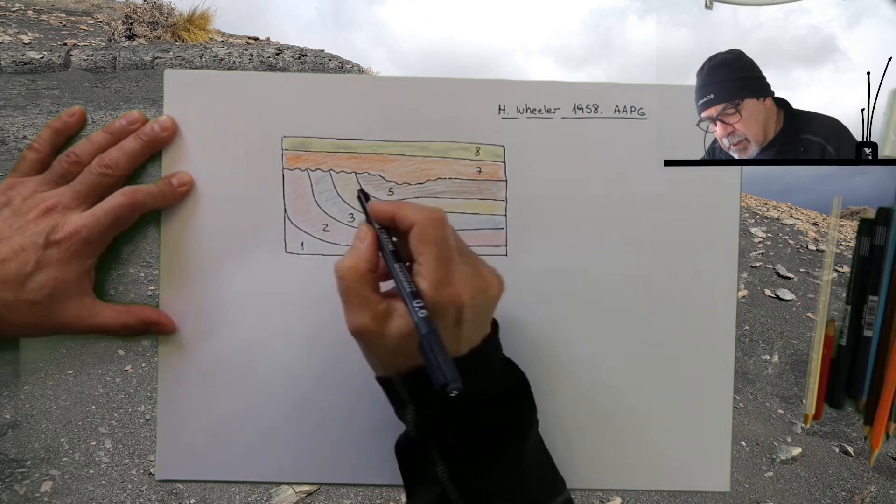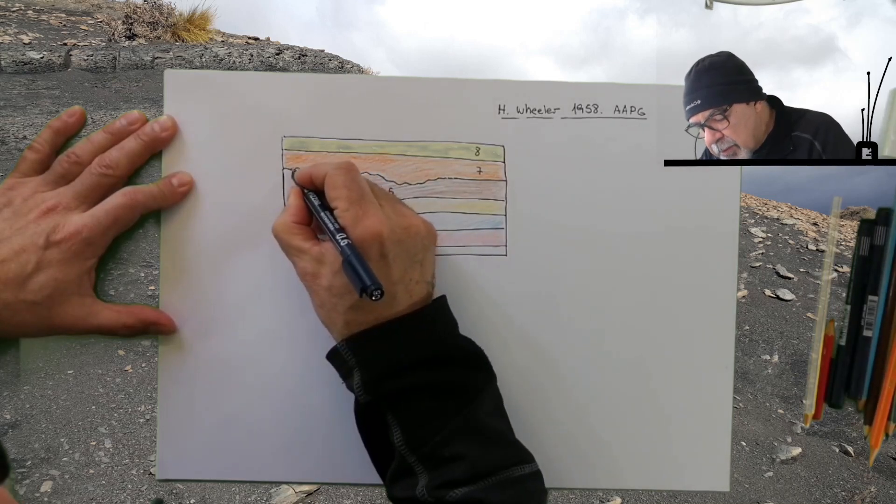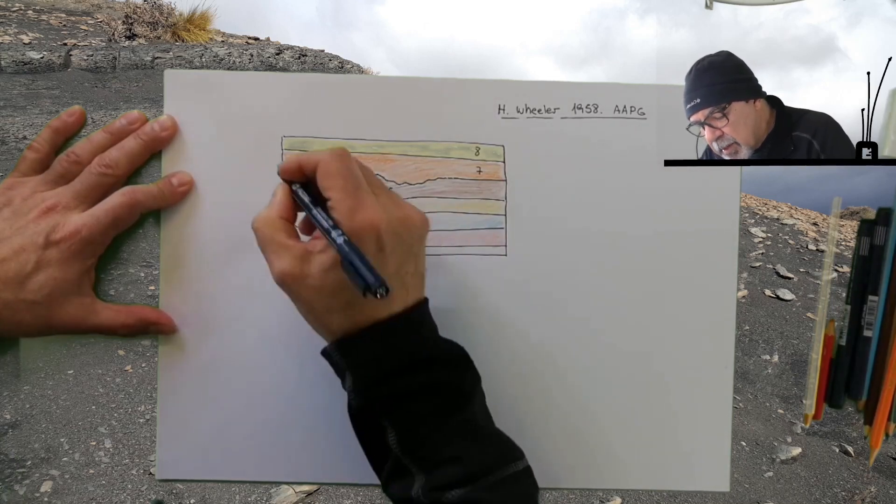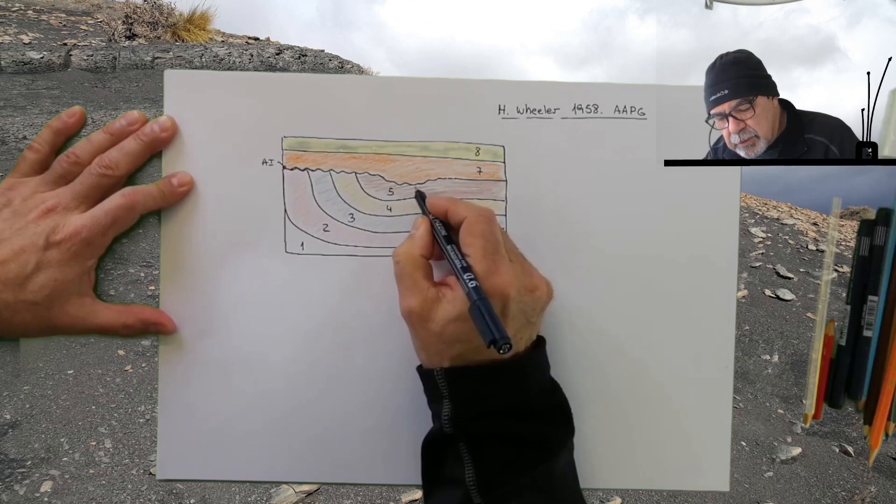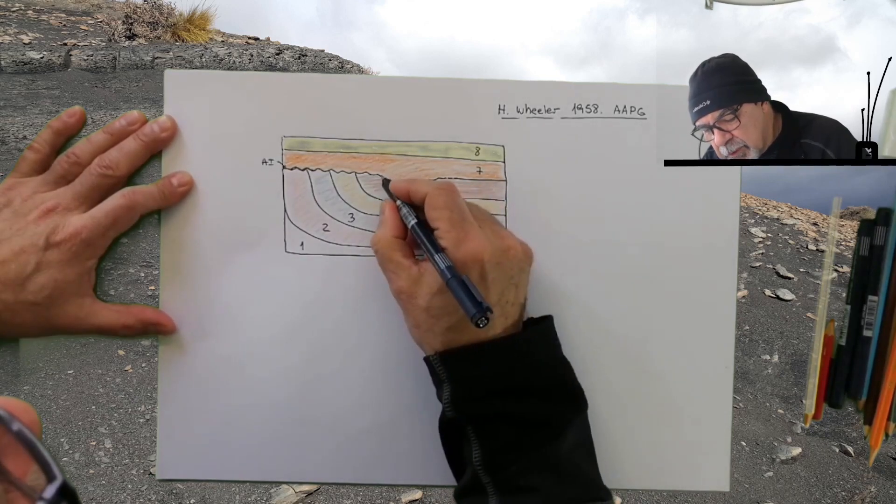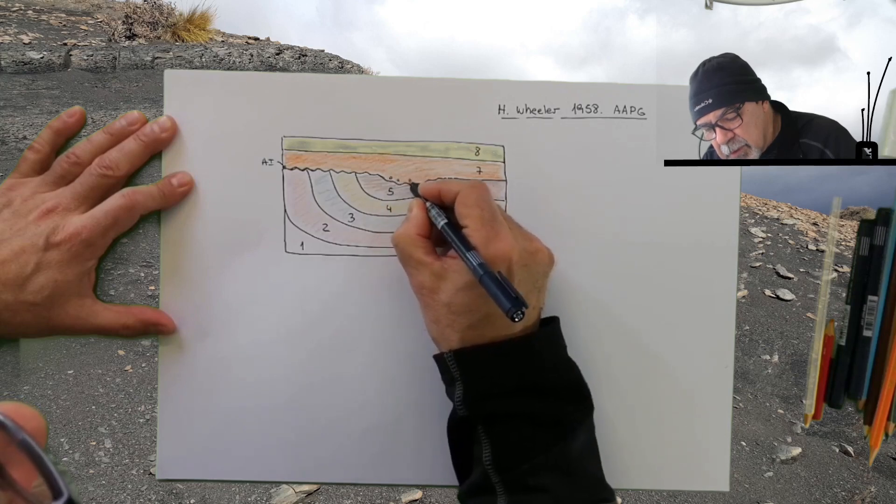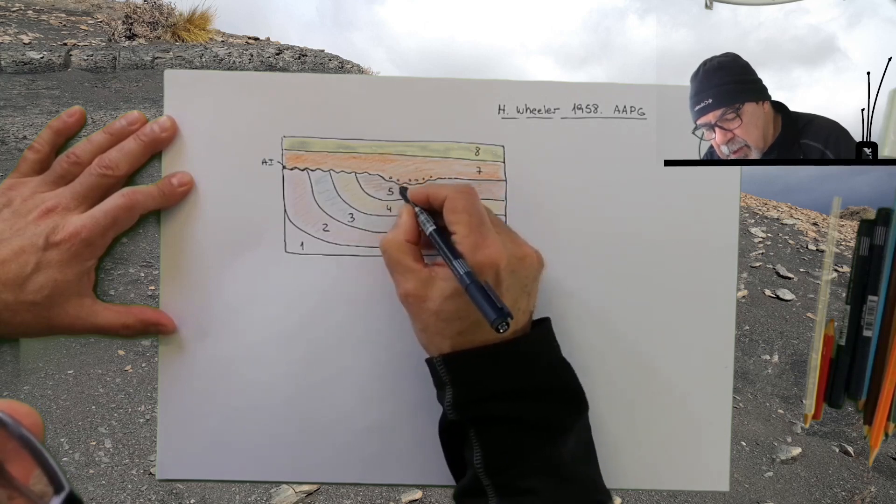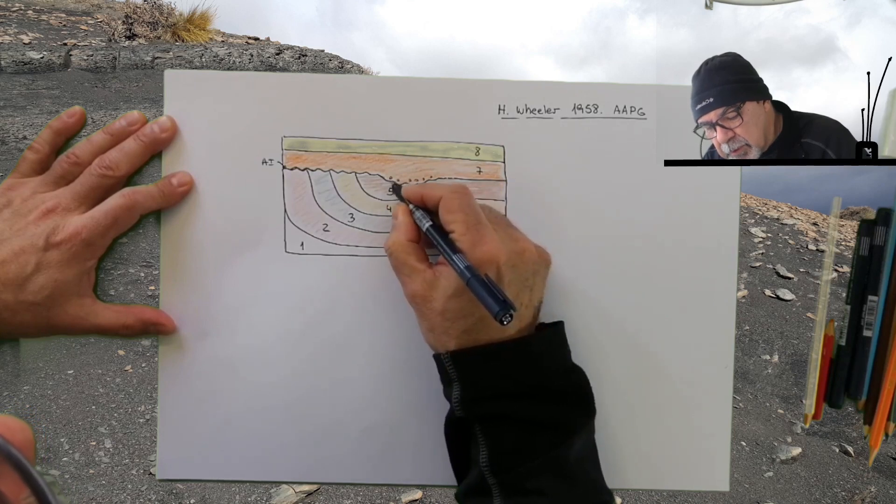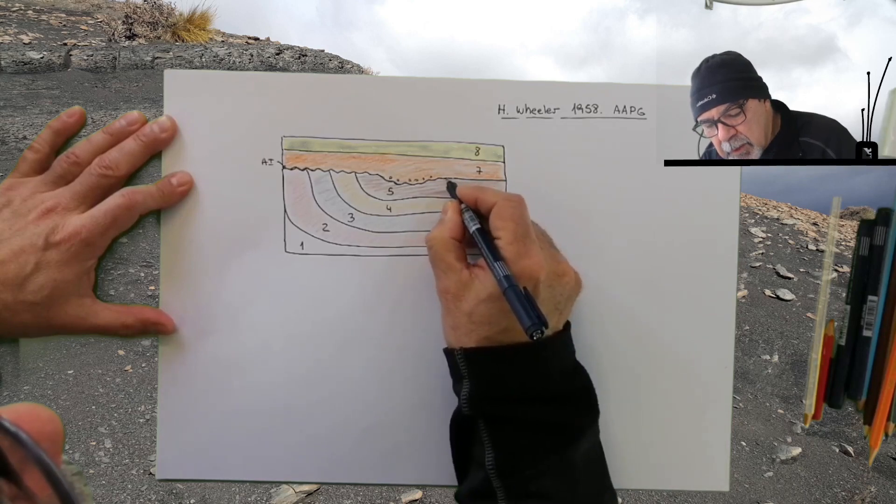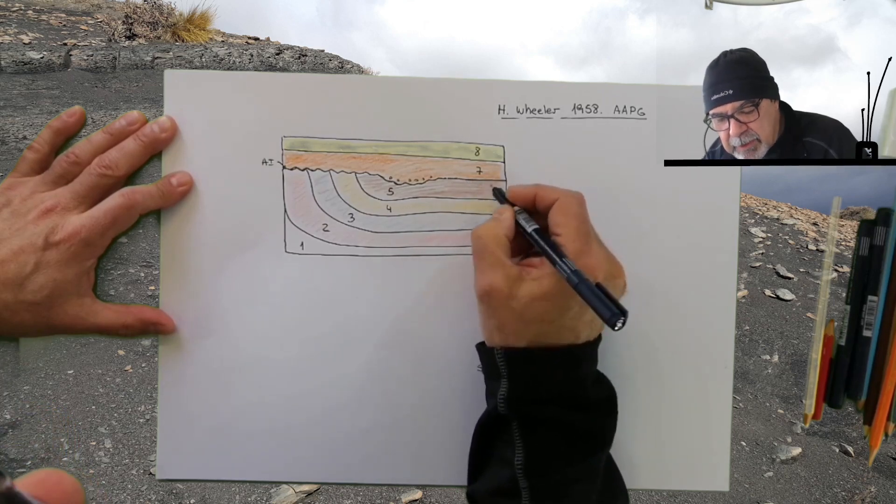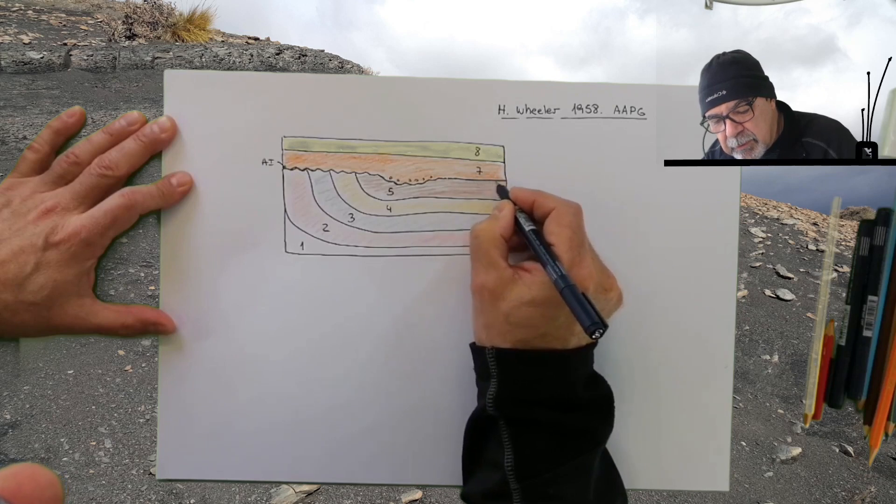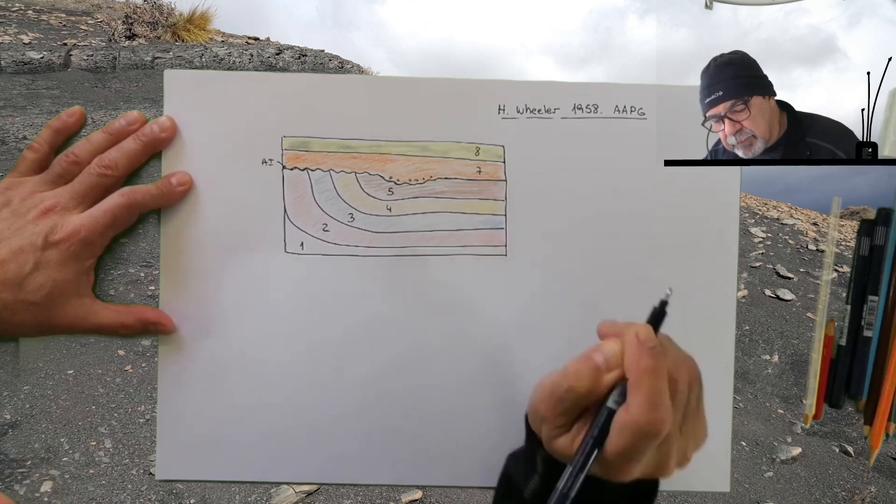This is the stratigraphic section. Here we can recognize an angular unconformity. We can see here a disconformity in which we can have this erosional boundary with some parallel contact but with some erosion. And here we have a paraconformity in which we lack some time but the boundary is just parallel and conformable.